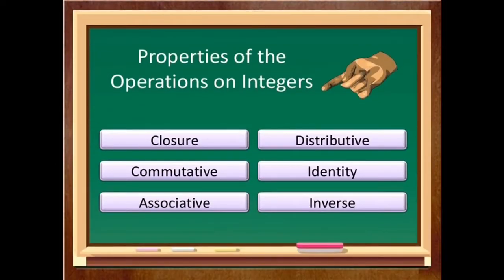Next is properties of the operations on integers. There are mainly six types of properties: first is closure property, second is commutative property, third is associative property, fourth is distributive property, fifth is identity property, and the sixth is inverse property. Let us discuss them in brief.